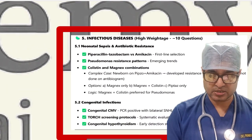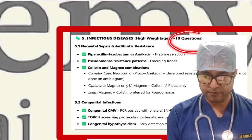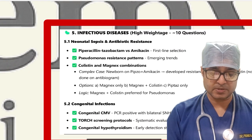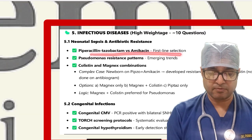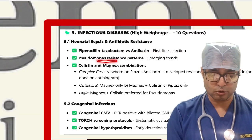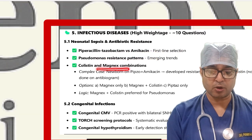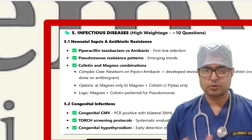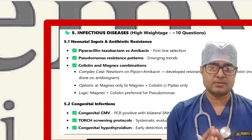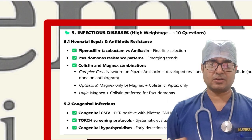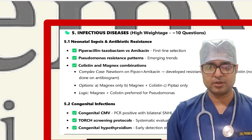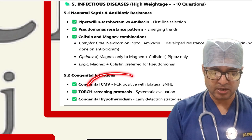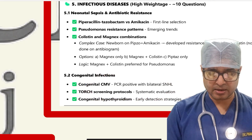Infectious disease had very high weightage — around 10 questions. Topics included neonatal sepsis, piperacillin-tazobactam versus amikacin, Pseudomonas resistance patterns, colistin-meropenem combination. Antibiotic resistance stewardship is the main upcoming theme in exams. Congenital infections like congenital CMV with PCR-positive TORCH screening protocol and congenital hypothyroidism were also asked.